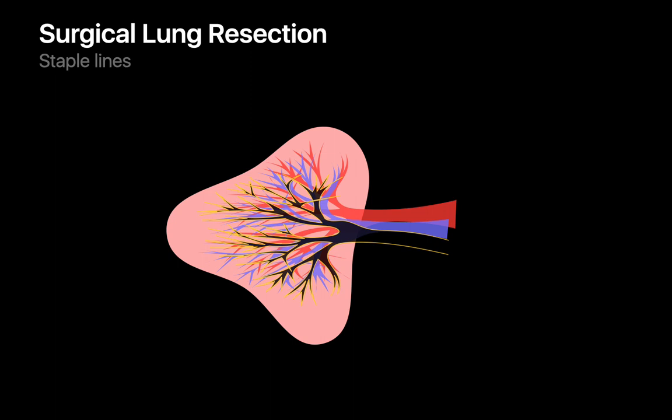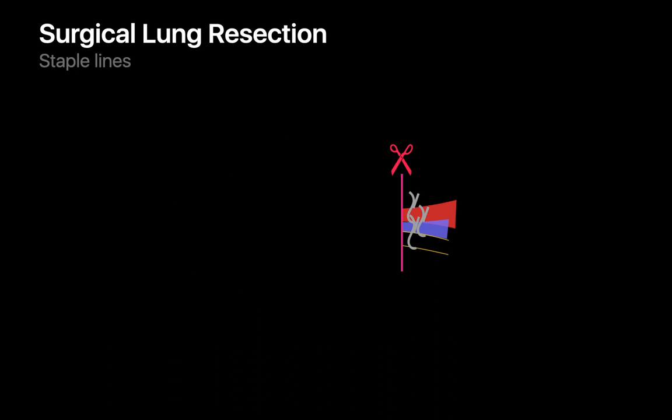We often see staple lines in a lung after a resection. With pneumonectomies and lobectomies, the basic mechanics of taking a hunk of lung tissue out is conceptually straightforward, requiring ligation and dissection of only a few tubes — a pulmonary artery, a pulmonary vein, and an airway. Once done, the lung tissue can be safely removed with no bleeding or air leak from the bronchovascular stump that remains in the body.